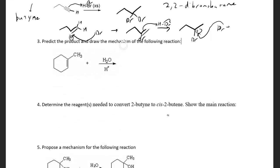For the next problem: predict the product and draw the mechanism. Since we have an acid — just like with HBr — we're going to use the alkene electrons as our nucleophile and protonate the double bond. We need to put the proton somewhere so that we make the most stable carbocation intermediate possible. My two options are this carbon or that carbon.